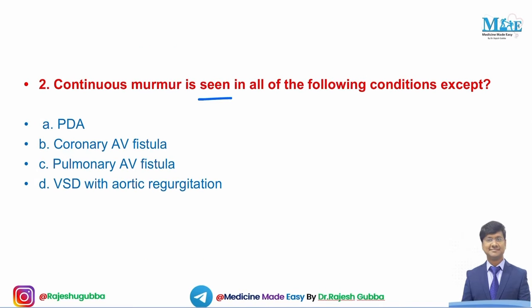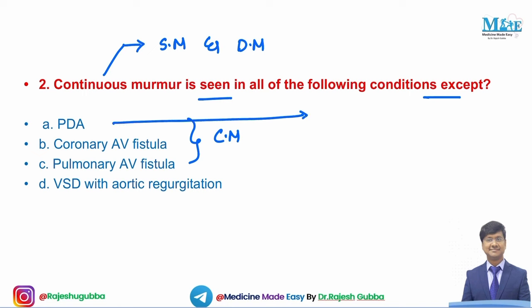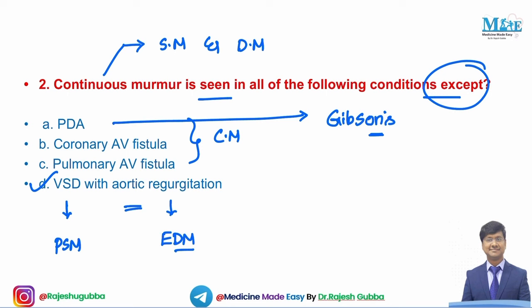Next question: continuous murmur is seen in all of the following except — PDA, coronary AV fistula, pulmonary AV fistula, VSD with aortic regurgitation. A continuous murmur is heard throughout systole and diastole. PDA, coronary AV fistula, and pulmonary AV fistula all produce continuous murmurs. PDA's murmur is called Gibson's murmur. In VSD with AR, VSD gives a pan-systolic murmur and AR gives an early diastolic murmur — not continuous.